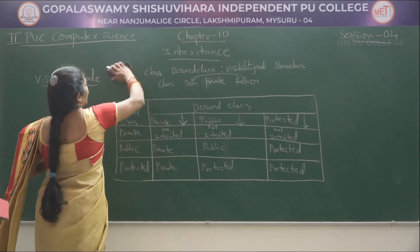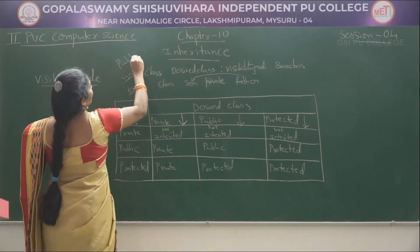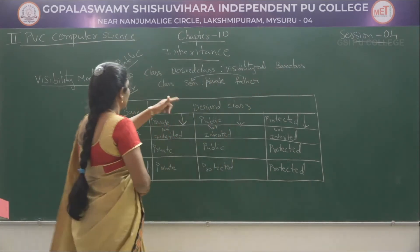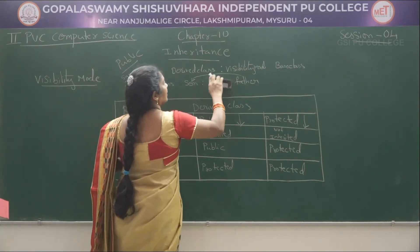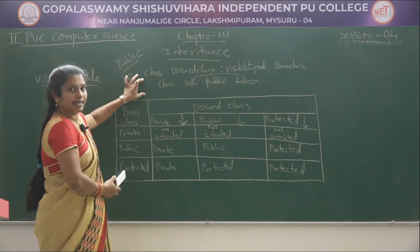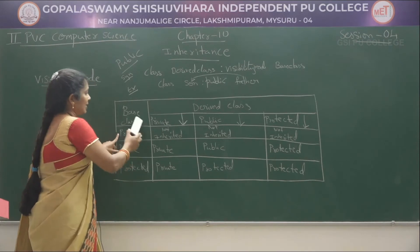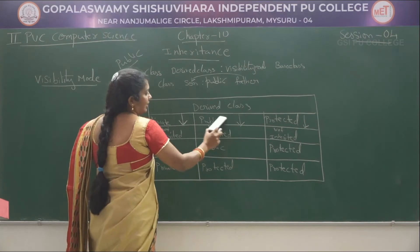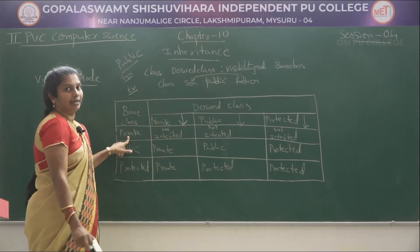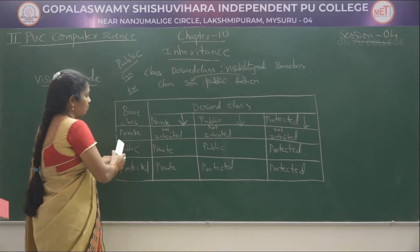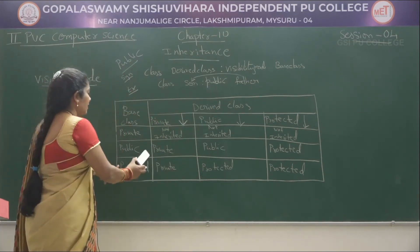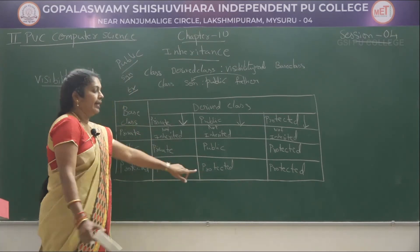For public inheritance, the syntax is the same: class, derived class, colon, visibility mode, then base class. The example is: class son, colon, public, father. Three points to explain: if the base class members are private, they cannot be inherited in the derived class; if the base class members are public, they become public in the derived class; if the base class members are protected, they become protected in the derived class.